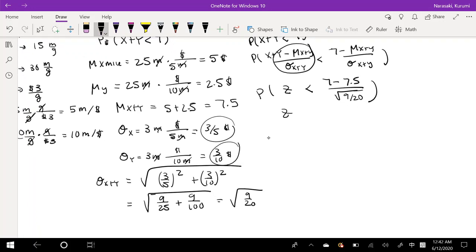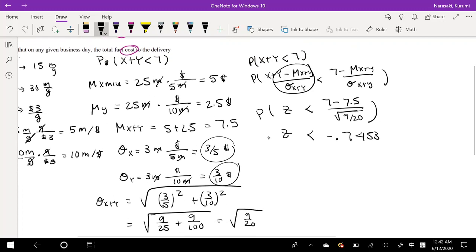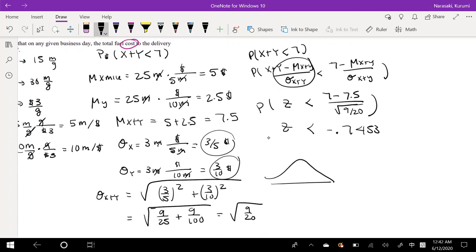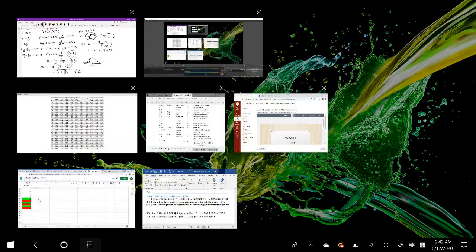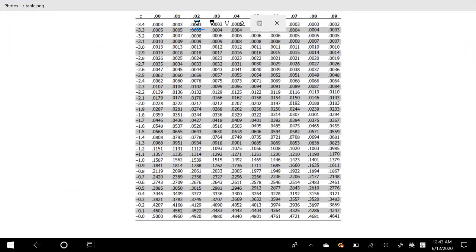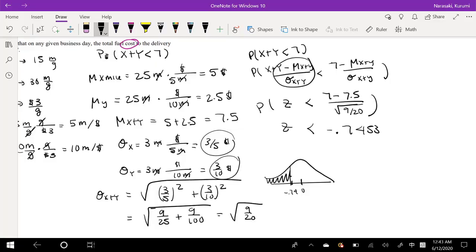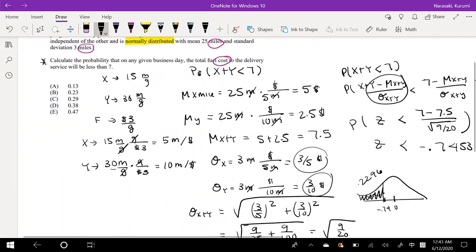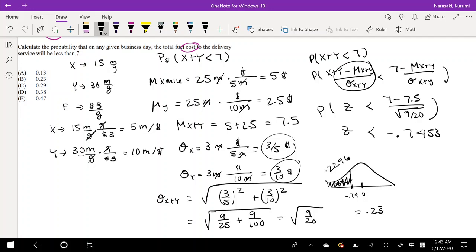less than negative 0.7453. And we have to reference our z table. So if this is 0, we're finding this value negative 0.74, and we're trying to find the probability that z is less than, so we're trying to find this probability right here. So let me pull out my z table. So all I have to do is go to negative 0.74. So that's 0.2296. So the probability right here is 0.2296, which is also equal to 0.23, answer number B.